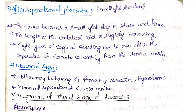The maternal sign: the mother may experience shivering sensation and hypovolemia. These are the four clinical features — pain before separation, uterine shape change, cord lengthening, and maternal signs — observed before and after placental separation.